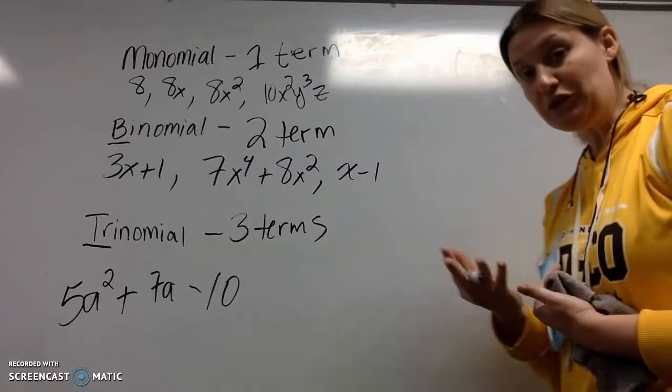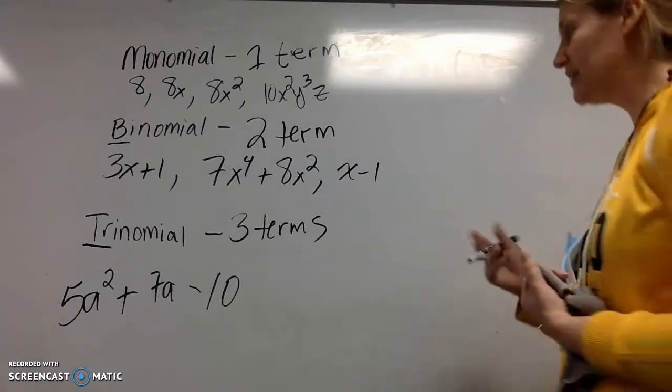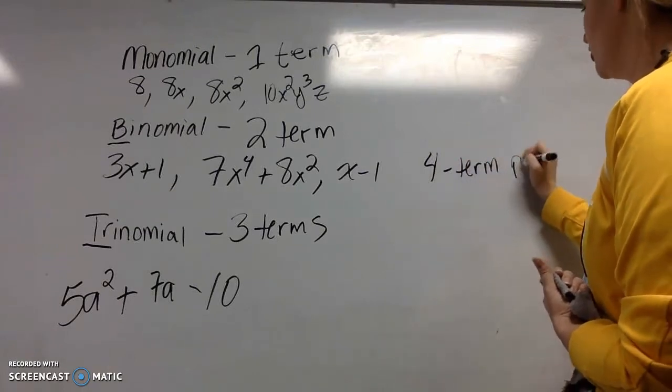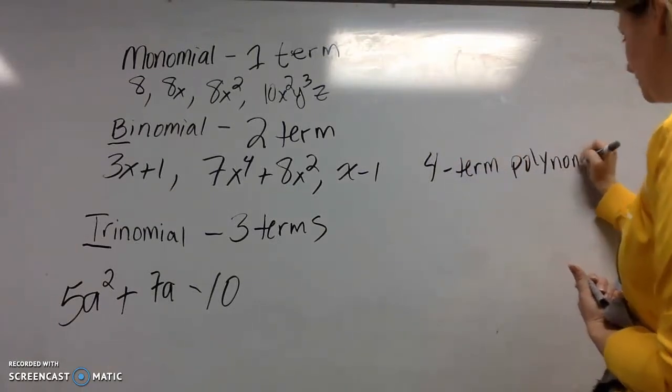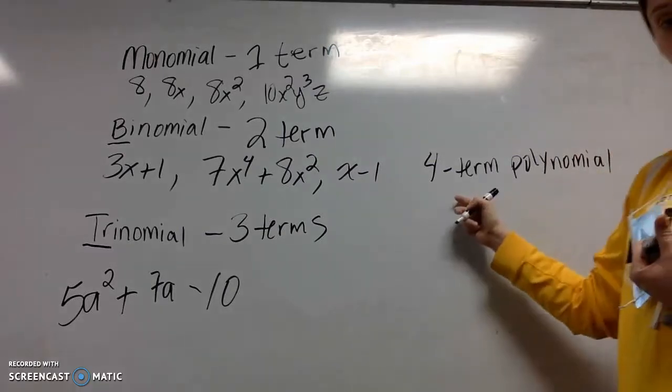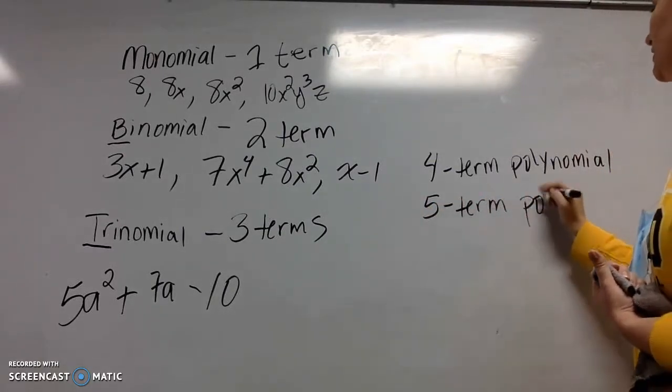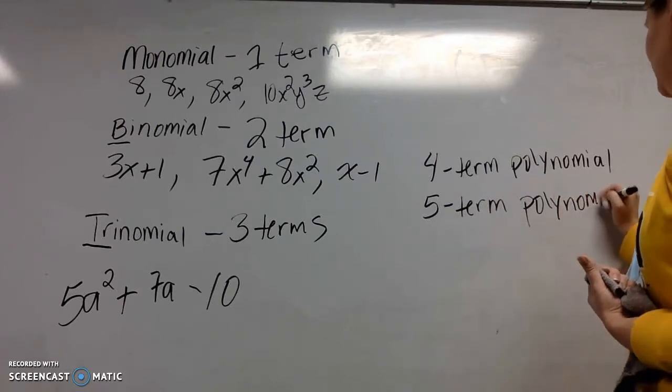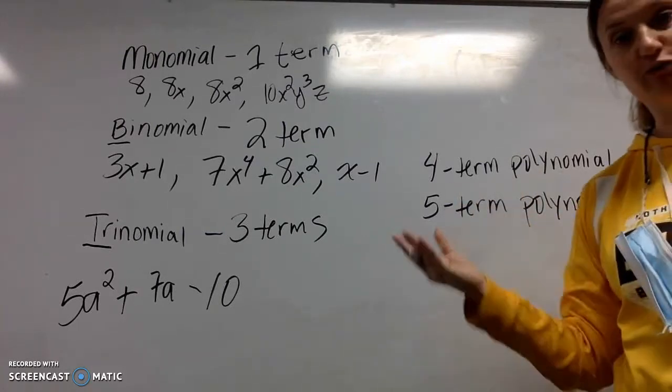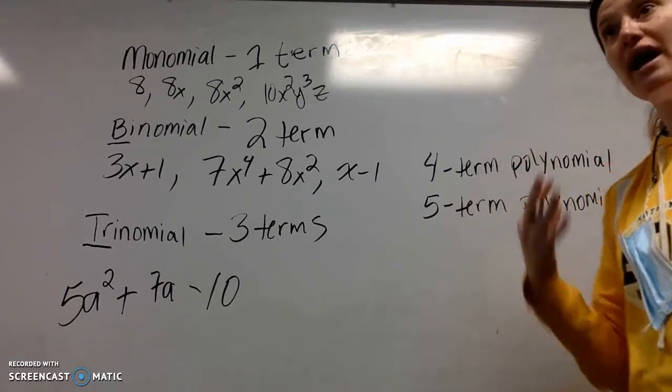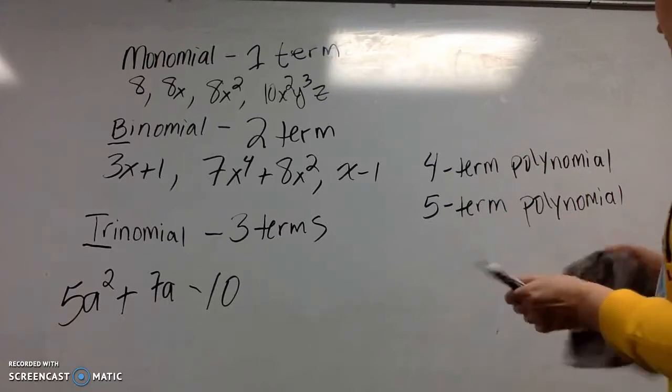After three terms, there is no more special name. So something that has four terms is called a four-term polynomial. Something with five terms is called a five-term polynomial, and so on and so forth down the line. So that's the vocabulary related to the number of terms.